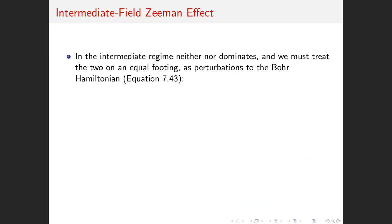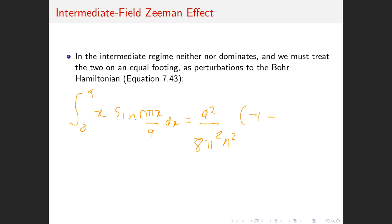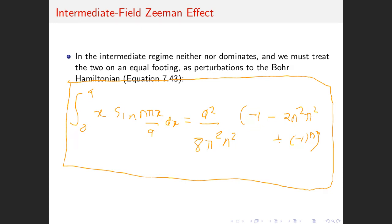The other integral, which was the integral from zero to a of x times sin(n pi x / a) dx, gives you a squared over 8 pi squared n squared, times (minus 1 minus 2 n squared pi squared plus (-1)^n). In an exam I'll try to make sure I give you these integrals, because the entire course is not really to check whether you can do these long types of integral.